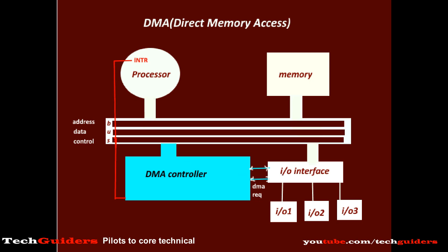The processor responds to this interrupt signal by programming the DMA controller with all the necessary information required by it to control the data transfer between the memory and the I/O device. This information includes the starting address in the starting address register, the word count in the word count register, and the control information. The starting address is the address in memory to or from which the data words are to be transferred.